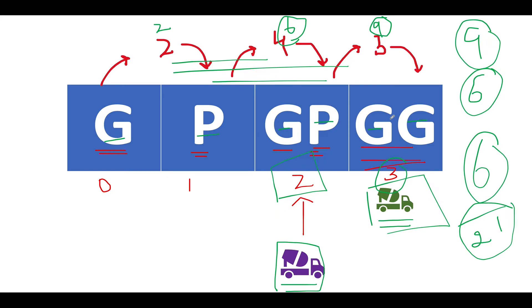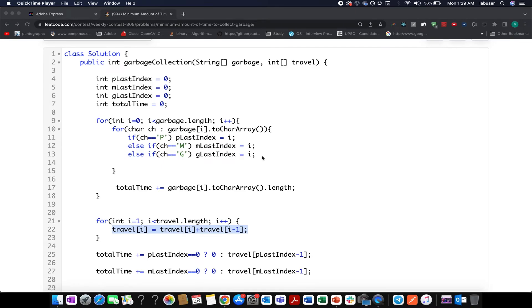Let's quickly walk through the coding section. In the first go, what I have done is I have created three variables: p last index that means garbage type of plastic storing the last index of it, similarly metal last index and glass last index. The fourth variable that I have created is total time. I start iterating over the input array and I check what is the current character in that particular garbage string. If it is p I update my p last index to i, similarly if the character is m I update the m last index to i, else I check if it is g I update the g last index to i.